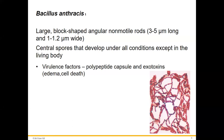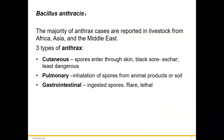Bacillus anthracis causes anthrax. It has exotoxins and a polypeptide capsule, making it hard for the immune system to find, and it can cause edema and cell death. The majority of non-bioterrorism anthrax cases are from livestock. There are three types: cutaneous (entry through skin — the eschar/black necrotic sore, least dangerous), pulmonary (inhalation of spores from animal products or soil, can cause respiratory death), and GI (ingested spores, very rare and would be lethal).